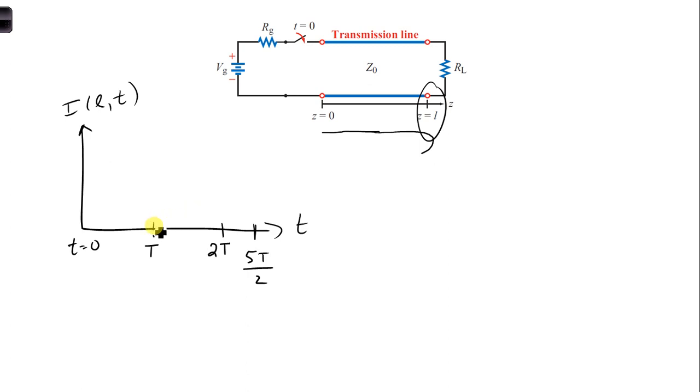And at that moment, at capital T, which is also equal to 0.5 microseconds, which is given, we are going to see I1 plus at the exact same moment that I1 minus is generated.